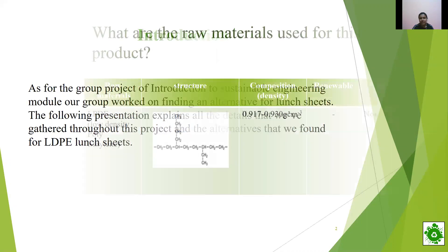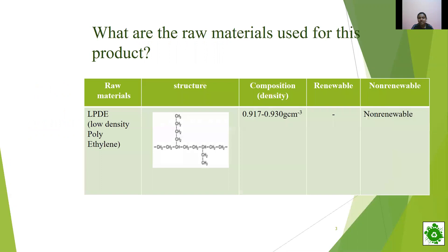Let's focus on the raw materials of this product. As you can see, these normal lunch sheets are made by LDPE, which is low-density polythene. This is a non-renewable material. I now invite Sipmi to explain the properties of lunch sheets.